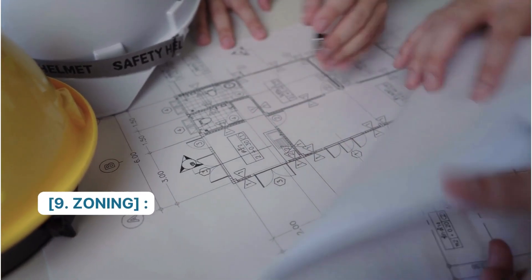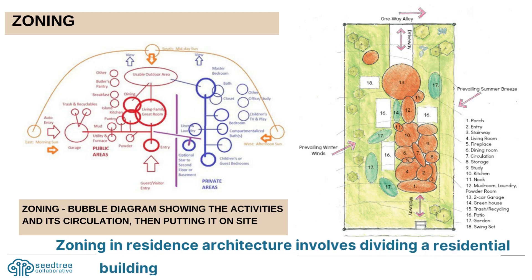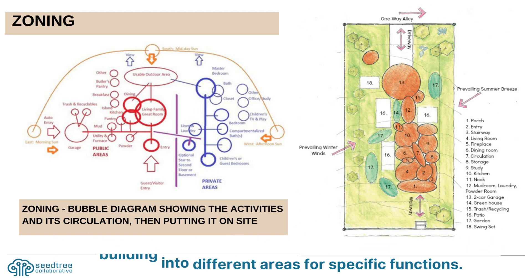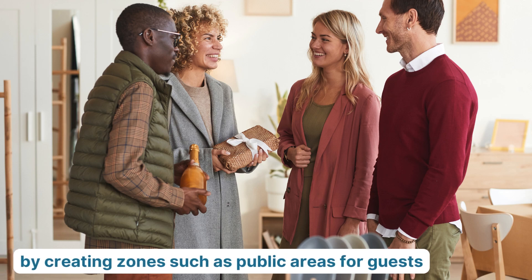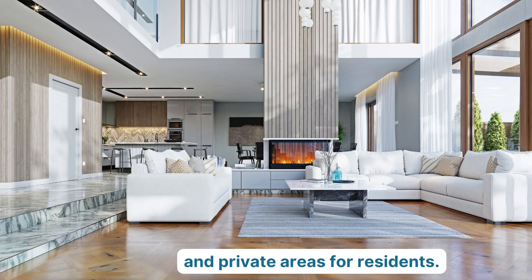Number 9: Zoning. Zoning in residence architecture involves dividing a residential building into different areas for specific functions. It optimizes the functionality and comfort of a home by creating zones such as public areas for guests and private areas for residents.